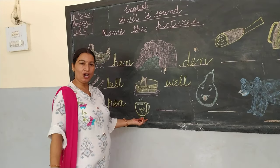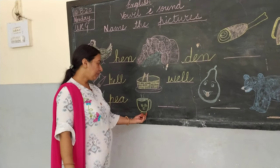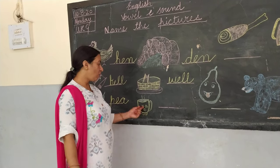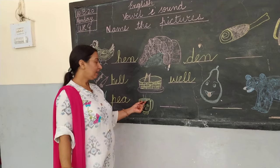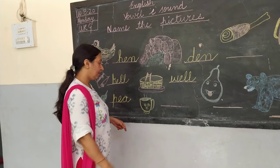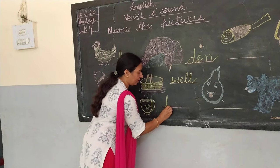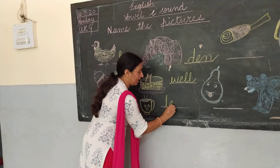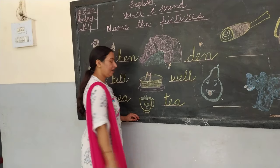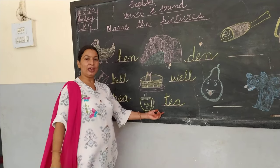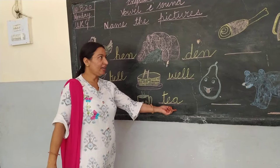Now this is the picture of tea. There is a cup and hot tea inside. The spelling of tea is T-E-A, tea.